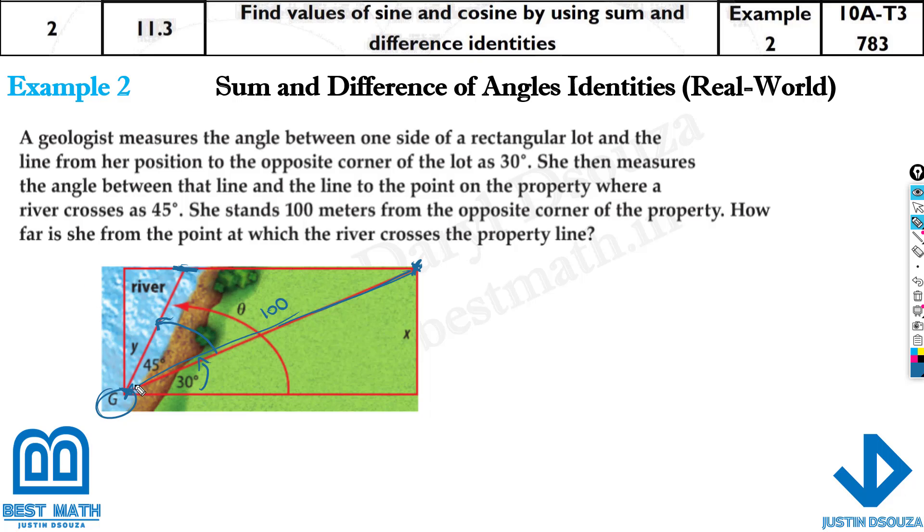And now, how far is she from the point at which the river crosses the property line? So this is the property end, right? Because they have already mentioned over here in the second sentence. So we need to find the distance from where she is until this point. Basically, this distance is what we need.